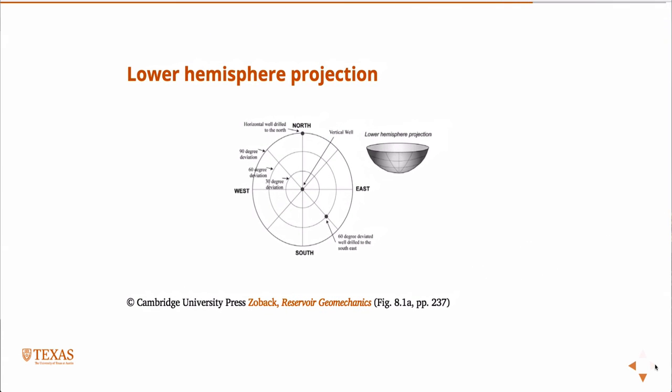We talked about this lower hemisphere projection. So this is a way to look at, this is sort of an aerial view of the Earth, and these concentric rings are angles of deviation, and then these are just a plane in space. So the idea here is that this was the bottom side of the sphere, the lower hemisphere.